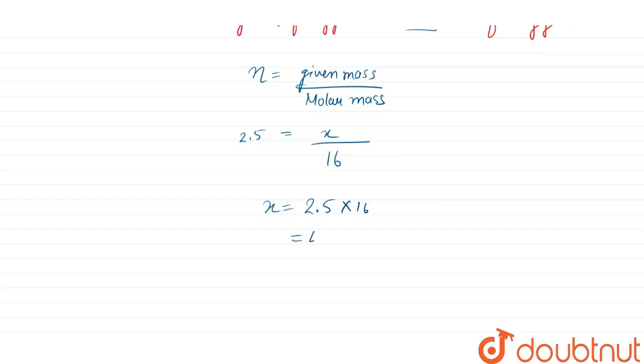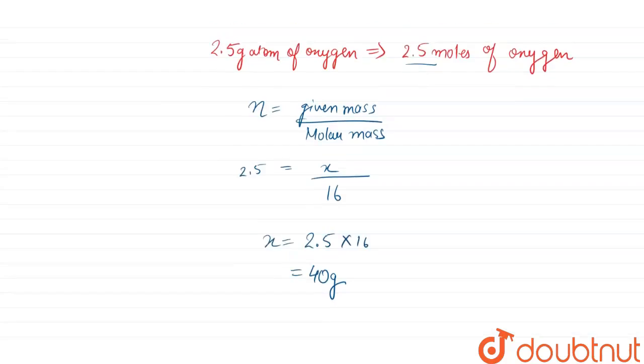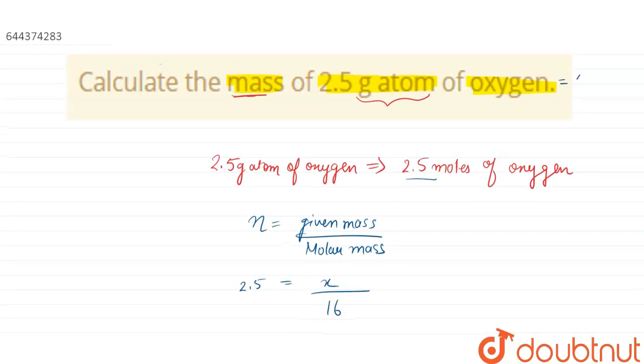Which comes out to be 40 gram. So the mass of 2.5 gram atom of oxygen is 40 grams. Thank you.